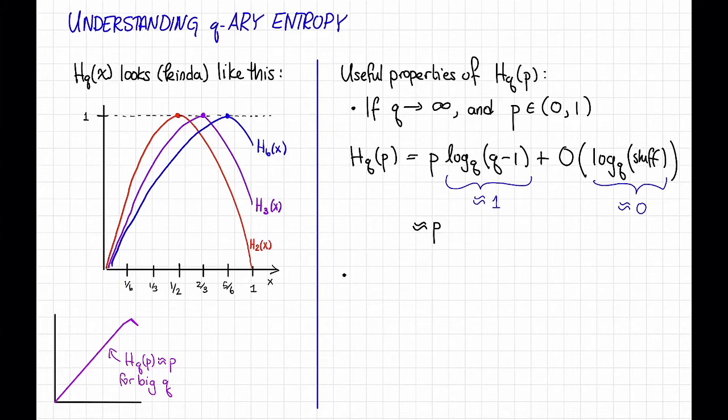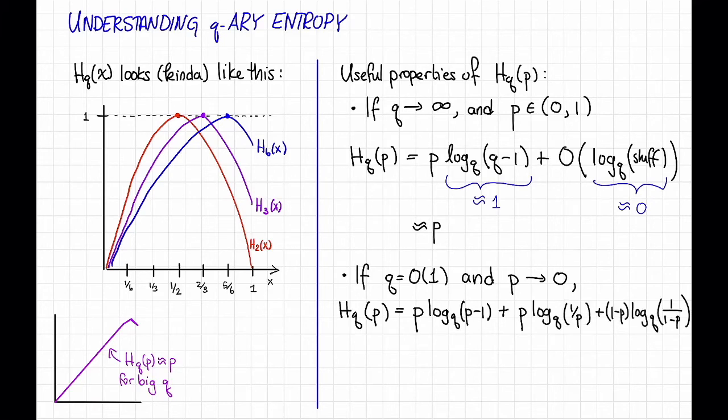Next parameter regime, if q is not so big, say q is a constant, and p is really small, then H_q(p), the q-ary entropy of p, is equal to this. I just copied out the definition again. And once again, let's look at each of these terms and think about how they behave as p gets small.